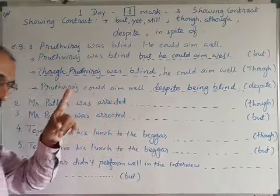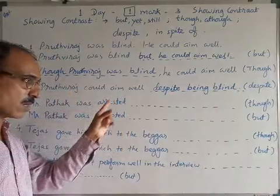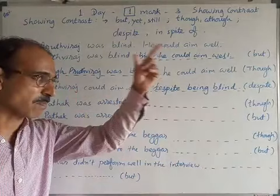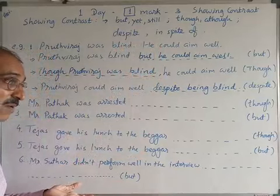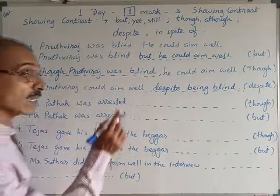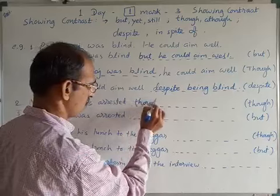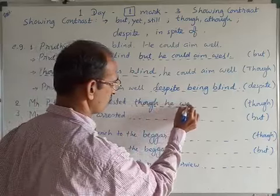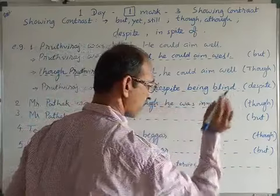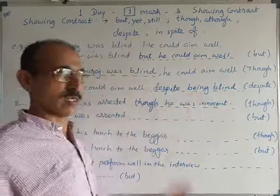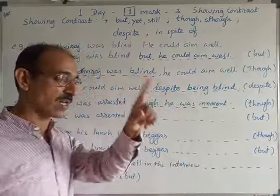Sentence completion example: 'Mr. Partook was arrested.' The government — though he was innocent. But he was innocent. So we use 'though' or 'but' to complete the sentence showing contrast.